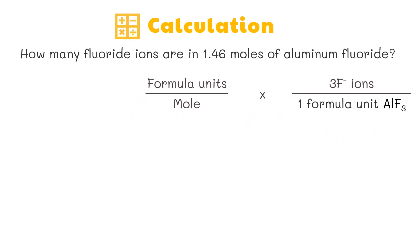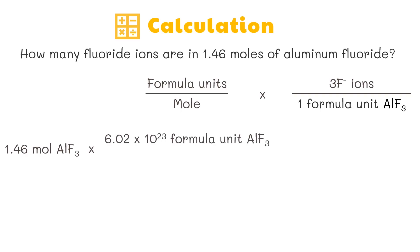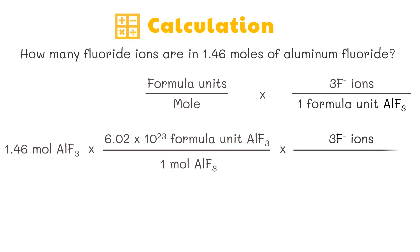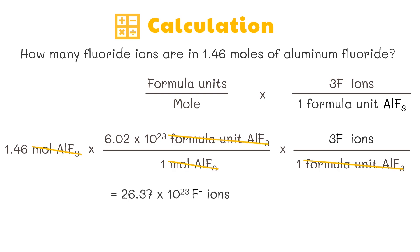Now let's calculate: 1.46 moles of aluminum fluoride multiplied by 6.02 × 10²³ formula units per mole, then multiplied by 3 fluoride ions per formula unit of aluminum fluoride. We can cancel common units. This equals 26.37 × 10²³ fluoride ions, or 2.64 × 10²⁴ fluoride ions.